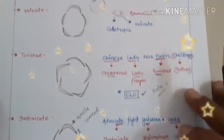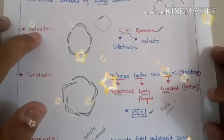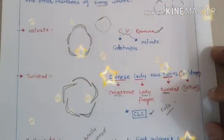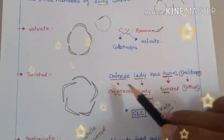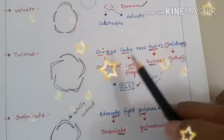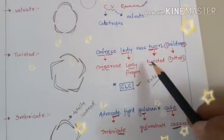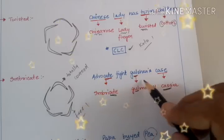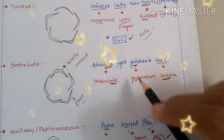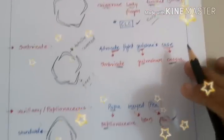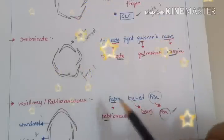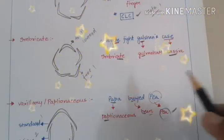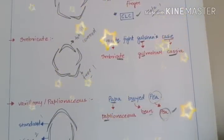Let's revise all kinds of Estivation once more. Valvate Estivation: example is Calotropis — C.V. Raman trick. Twisted Estivation: 'Chinese lady has twin children' — China rose, lady finger, and cotton. Imbricate: 'Advocate fight Gulshan's case' — Gulmohar and Cassia. Vexillary or Papilionaceous: 'Papa Bide P' — Bean and Pea are the two examples.